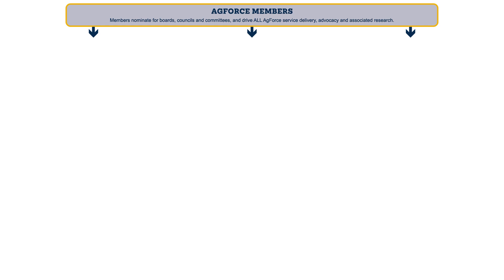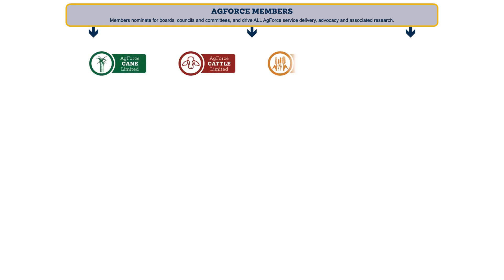We have a number of elected member groups who make decisions and lead on behalf of all AgForce members. The first of these groups are four elected commodity boards: cane, cattle, grain, and sheep, wool and goats.